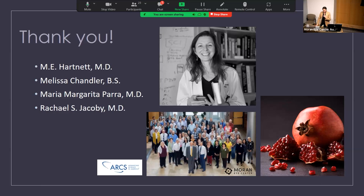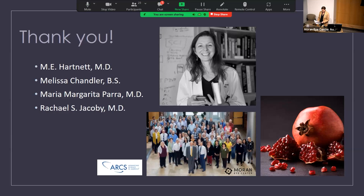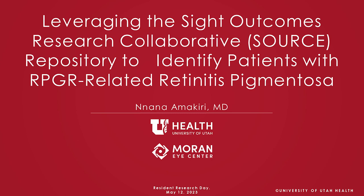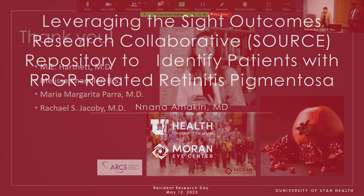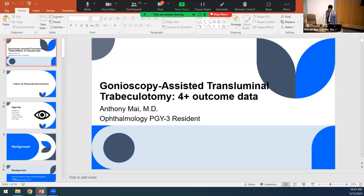Our next speaker is Nanan Amakiri, talking about 'Leveraging the Sight Outcomes Research Collaborative Repository — also called the SOURCE repository — to Identify Patients with RPGR-Related Retinitis Pigmentosa.' He wanted to become a teacher and a basketball coach. He notes that being a physician allows for the teaching component, and with Jordan in his class, there's still hope to fulfill the basketball coaching role.